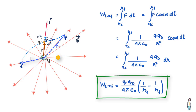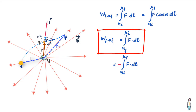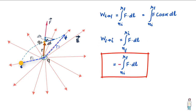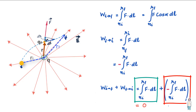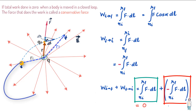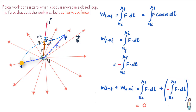The route the charge took between the initial and final points does not affect the magnitude of work done. If we take the charge back to the original position, the work done is just the integral with flipped limits, which is the negative of the original integral. So the total work done when the charge moves from I to F and then back to I is zero for any loop. Forces where the total work done in a round trip is zero are called conservative forces. Alternatively, if the work done in moving a charge from I to F is the same for any path taken, the force is termed conservative.